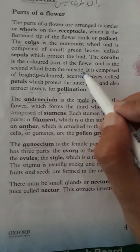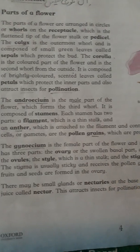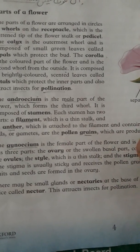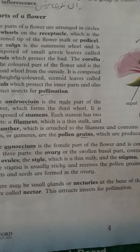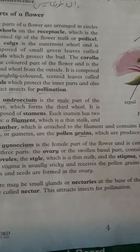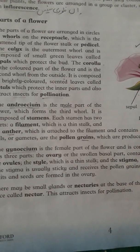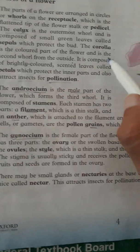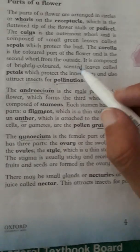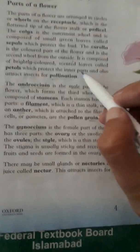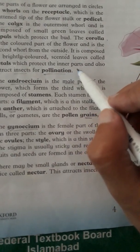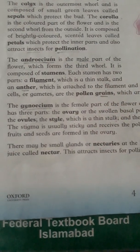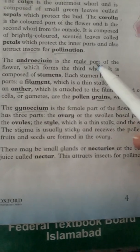The corolla is the colored part of the flower and is the second whorl from the outside. The first whorl is the sepals on the receptacle or pedicel, and the second colorful part — the petals — attracts insects. It is composed of brightly colored, scented leaves called petals, which protect the inner part and also attract insects for pollination.